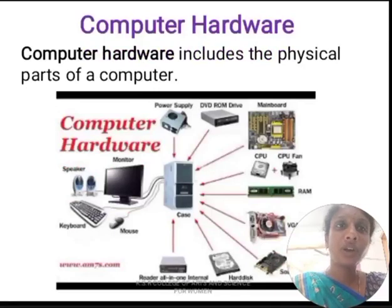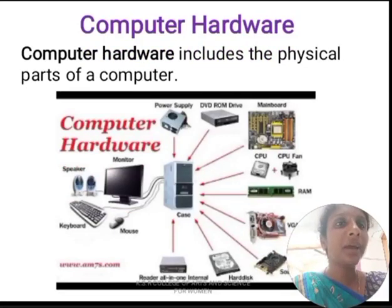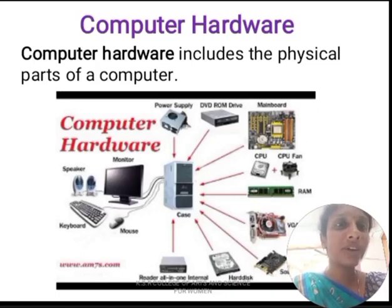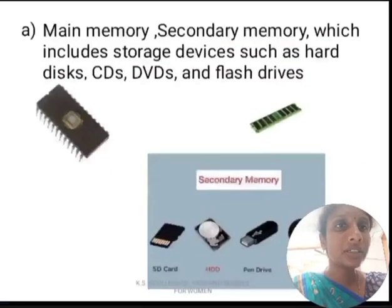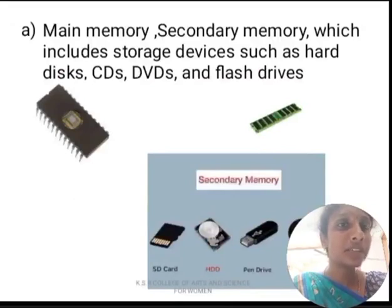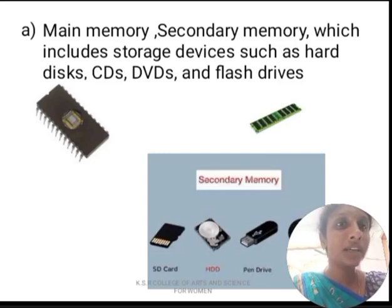Next, we are going to discuss about computer hardware. Computer hardware includes physical components such as main memory, secondary memory, RAM, ROM, flash memories, input devices, and output devices. The memories are classified into main memory and secondary memory, which are used as storage devices. Other storage devices like CD, DVD, flash drives, and pen drives are also used to store data.